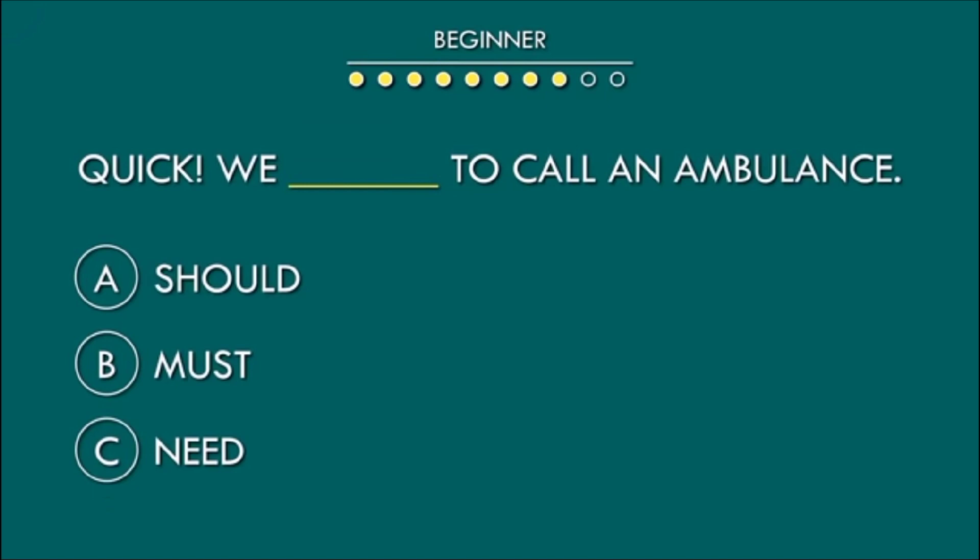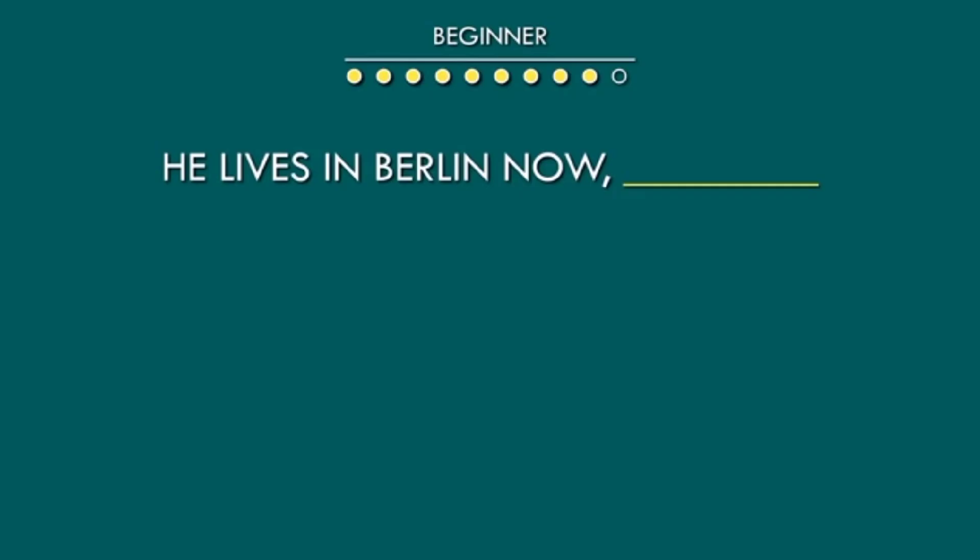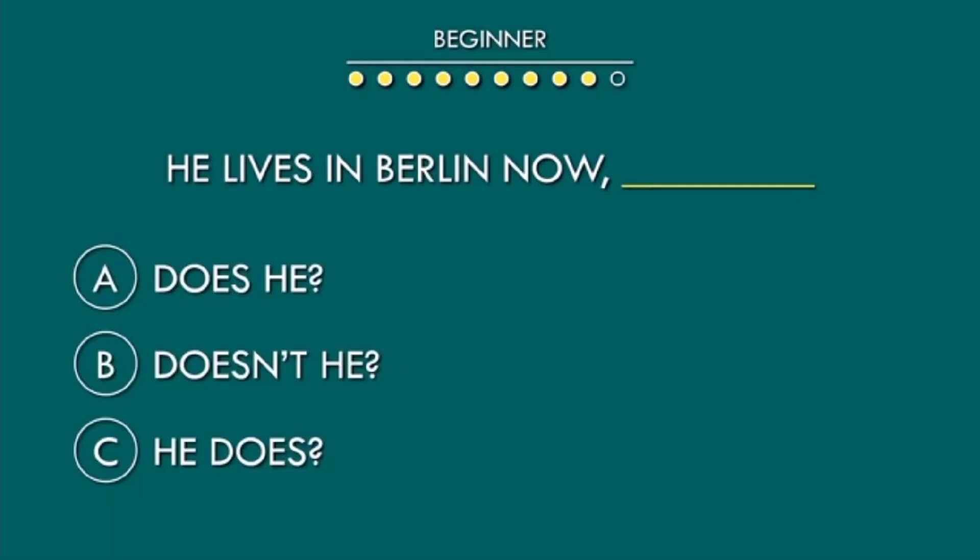Quick, we blank to call an ambulance. Should, must, see need. C is the correct option. He lives in Berlin now, blank. A: Does he. B: Doesn't he. C: He does. B is the correct option.